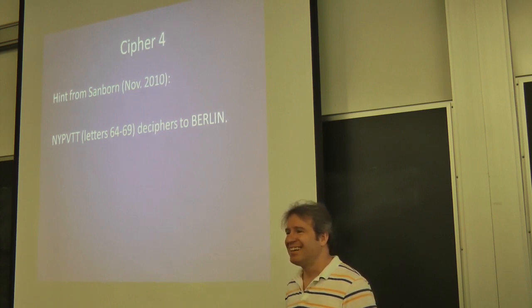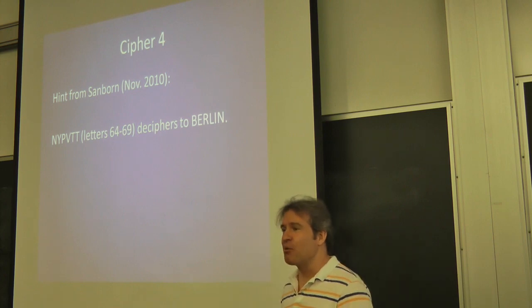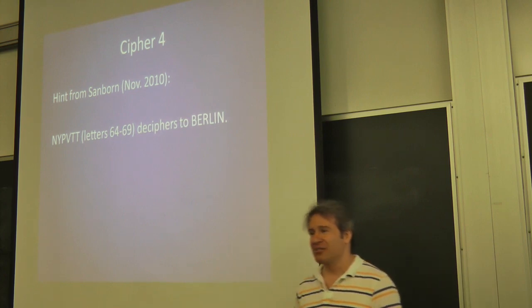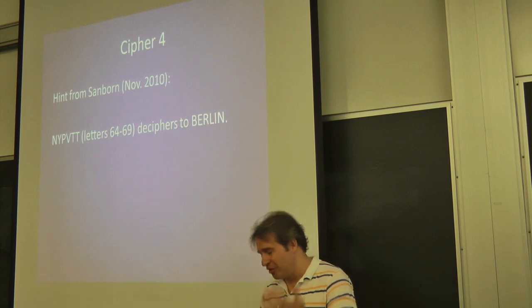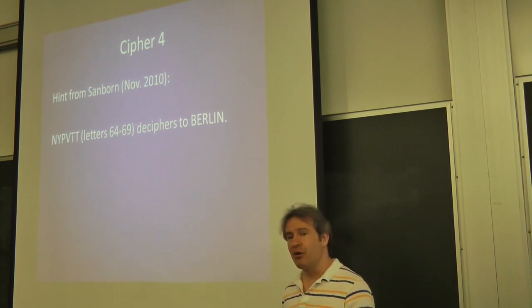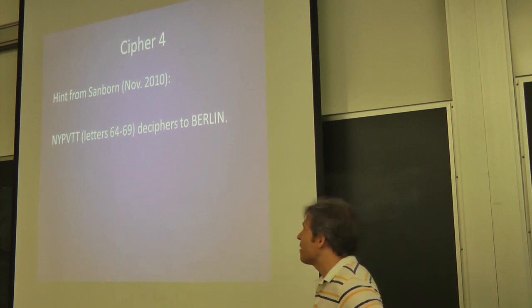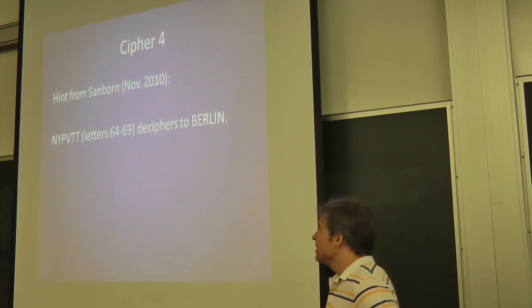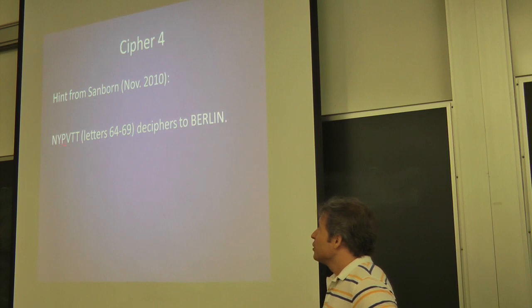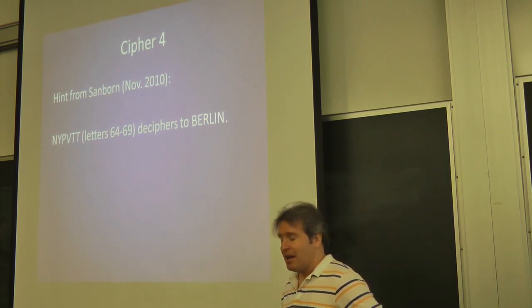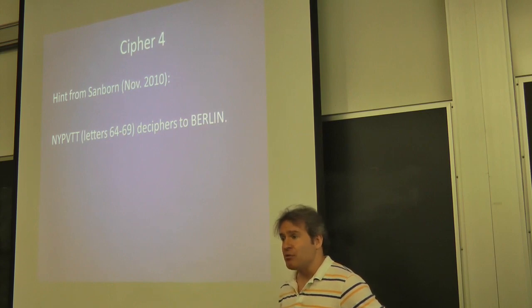And then, what's got to happen after CIA's, like, oh, we broke this before him? What's got to happen next? NSA's got to come in and say, well, we were before CIA. So NSA was actually the first to figure out these decipherments, even though it was located at CIA. Not the most convenient location for them. So finally, he's given a hint that this portion of the ciphertext deciphers to Berlin.